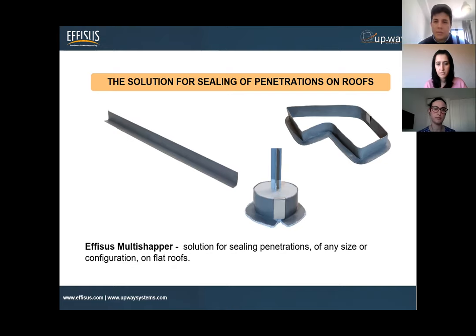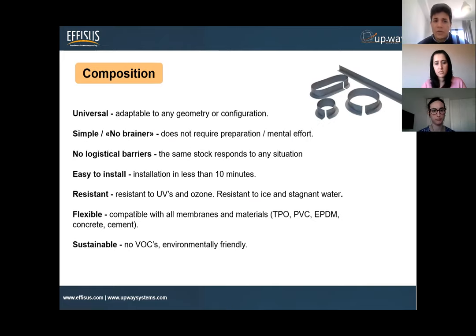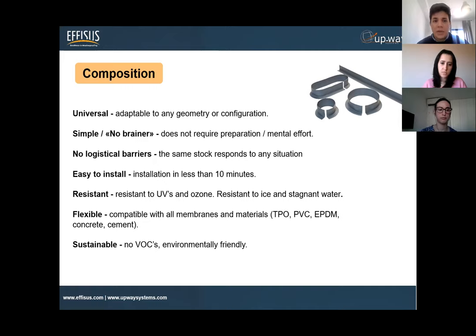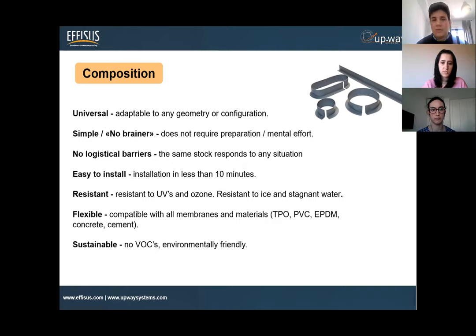Talking more about the composition of the material — it's a polymer-based material with an internal aluminum mesh that allows it to be very flexible and moldable, so there are no logistic barriers. It comes in a single one-meter membrane. Installation is very easy and fast — less than 10 minutes. It's resistant to UV, and the curb as well as the pouring filler that goes inside are very UV stable, compatible with virtually all types of membranes and materials applied on roofs: TPO, PVC, concrete, asphalt, bitumen, and single ply membranes. It has no VOC composition so it's environmentally friendly.